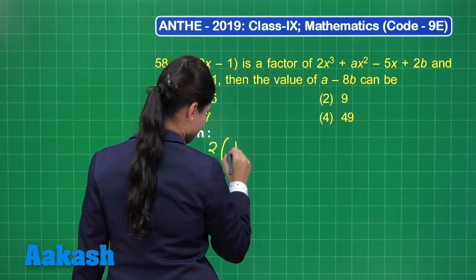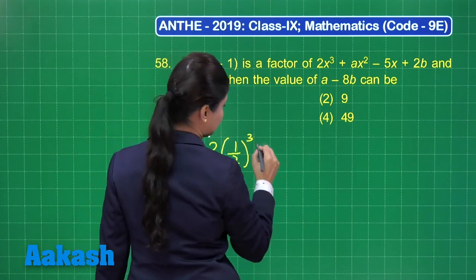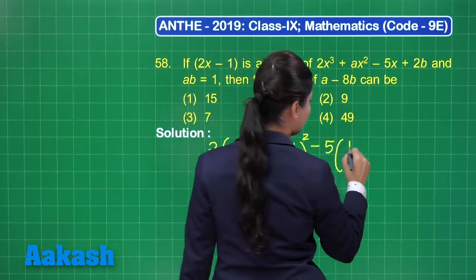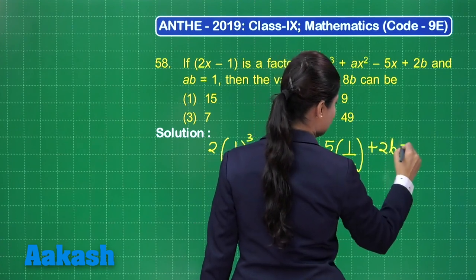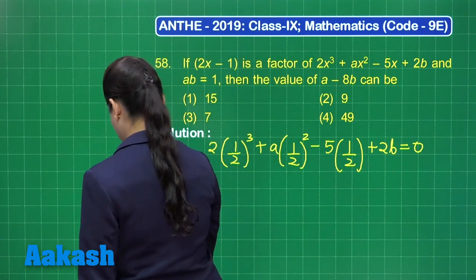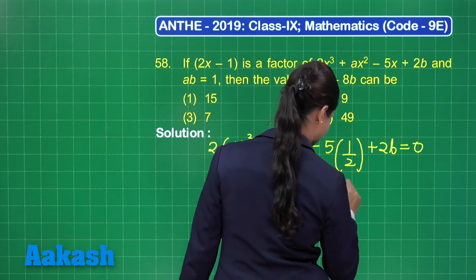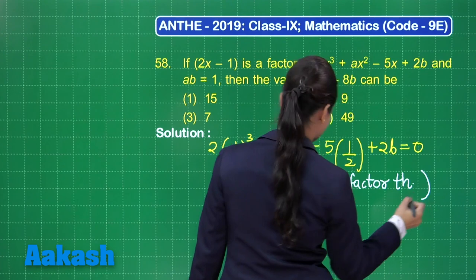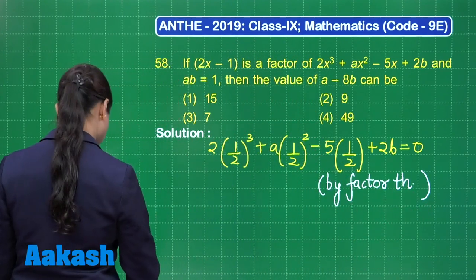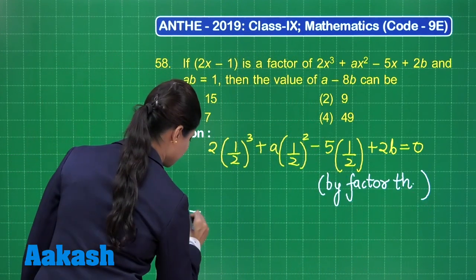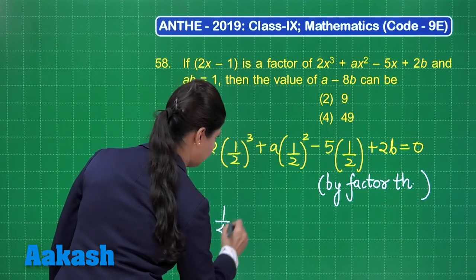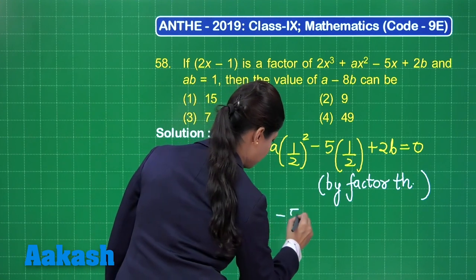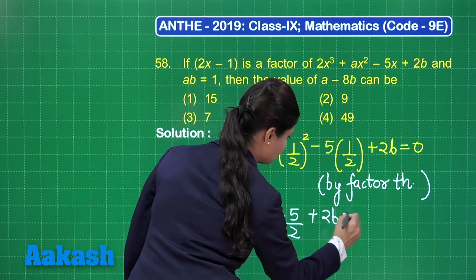Substituting, you get: 2 into (1/2)³ plus a into (1/2)² minus 5 into (1/2) plus 2b equals 0. This gives 1 upon 4 plus a upon 4 minus 5 by 2 plus 2b equal to 0, by the factor theorem.